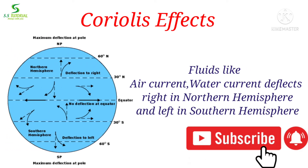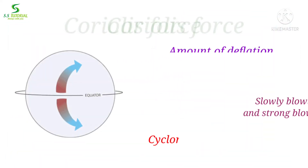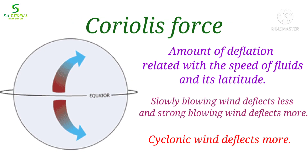Fluids like air currents and water currents moving across large areas deflect to the right side in the northern hemisphere and to the left side in the southern hemisphere — they cannot move in a straight line at large scale. This effect is known as the Coriolis effect. The amount of deflection is related to the speed and latitude of the moving object. Therefore, slowly blowing winds deflect a small amount while strongly blowing winds deflect a higher amount. That is why cyclonic winds deflect more.